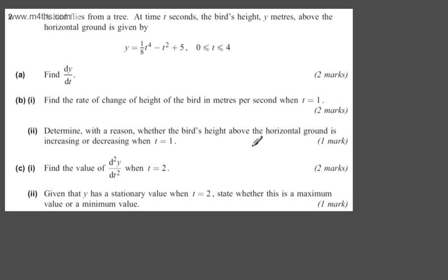In question 2, we're told a bird flies from a tree. At time t seconds, the bird's height y meters above horizontal ground is given by y equals one-eighth t to the fourth minus t squared plus 5, where t is between 0 and 4.